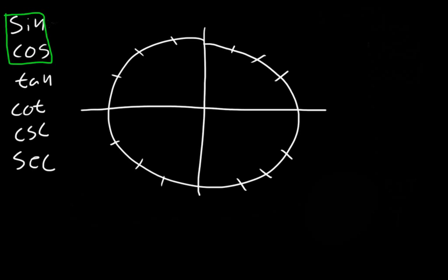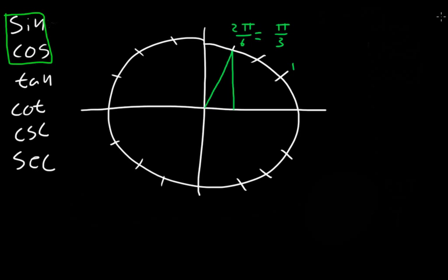Now for cosine: if y is the sine value, x is going to be the cosine value. If we create this triangle — this correlates with the radian value of 2π/6, which reduces to π/3. So your teacher might ask for the cosine of π/3 or the cosine of 2π/6.